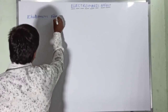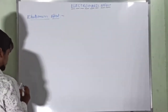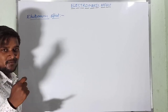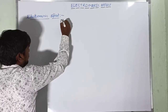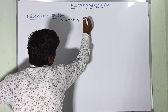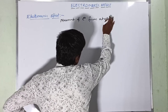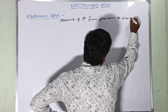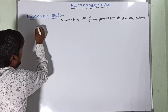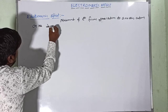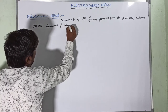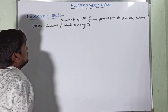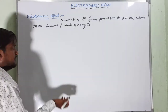Electromeric effect is the movement of electrons from one atom to another atom on the demand of the attacking reagent. This is called the electromeric effect.